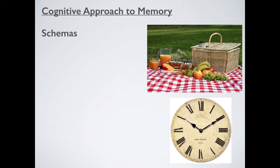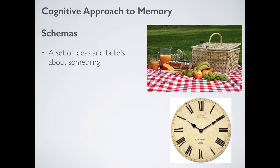The biggest area of research into the cognitive approach to memory is in this idea here: schema. Schemas are a little bit difficult to define. My understanding is that a schema is a set of ideas and beliefs about something. For example, picture in your mind a restaurant. You're probably imagining sitting at a table, maybe a tablecloth, definitely cutlery, a knife and fork, maybe a drink, food in front of you, waiters bustling around, other people sitting there. What you're imagining is your schema for a restaurant — your set of ideas and beliefs, how your mind constructs it.